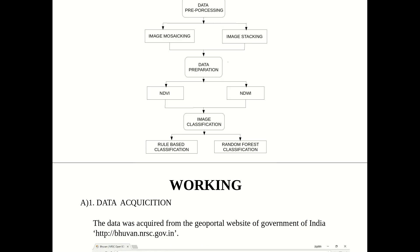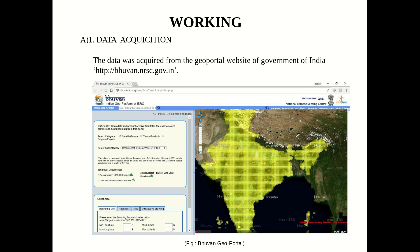Moving to the working stage — Data Acquisition. The data was acquired from the Geo portal website of the Government of India, as can be seen in the image. The datasets were chosen from the month of February because it had the least cloud cover.